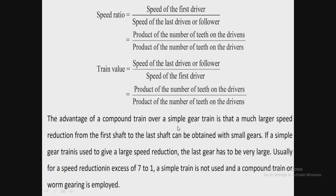The main advantage of a compound gear train over a simple gear train is that a much larger speed reduction from the first shaft to the last shaft can be obtained with smaller gears. If a simple gear train is used for a large speed reduction, the last gear has to be very large. Usually for speed reduction in excess of 7:1, a simple train is not used and a compound train or worm gearing is employed.